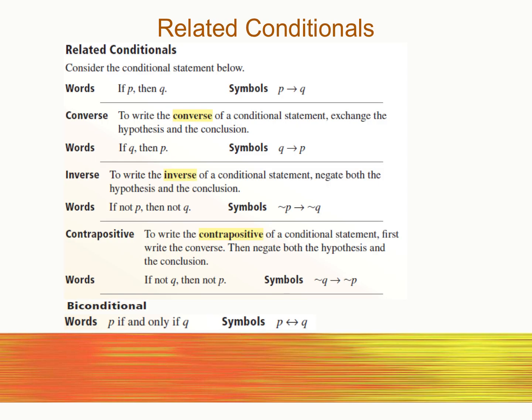This slide is just a summary of all the different terms we've seen: the definition of a conditional — an if-then statement — then converse, inverse, contrapositive, and biconditional. You need to memorize what each means. If I give you a conditional and ask for the inverse, keep it in the same order but negate both the conclusion and the hypothesis. If I ask for a contrapositive, that means flip it and negate it. You need to understand all of these vocabulary terms and recognize the math symbols.